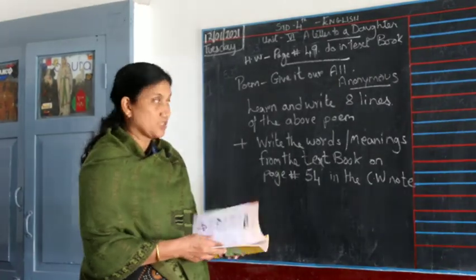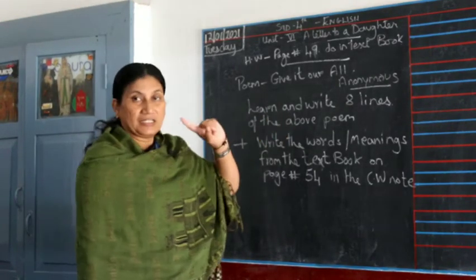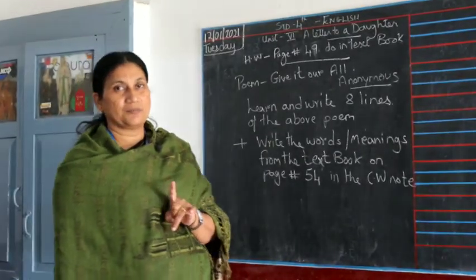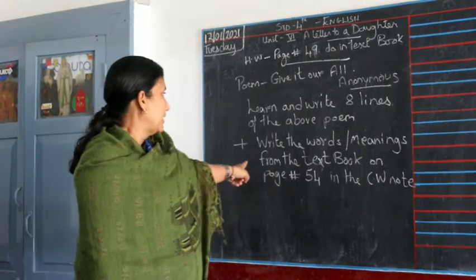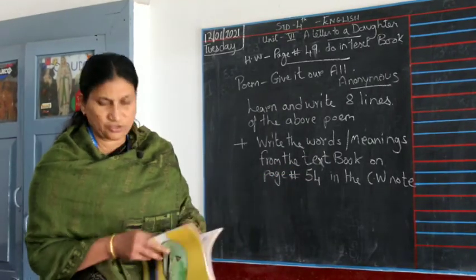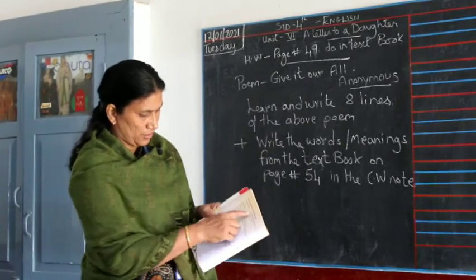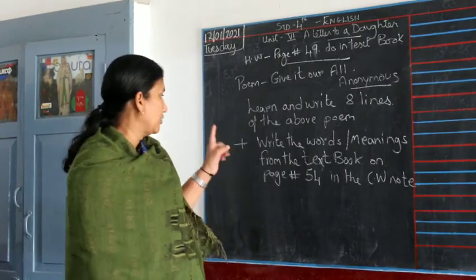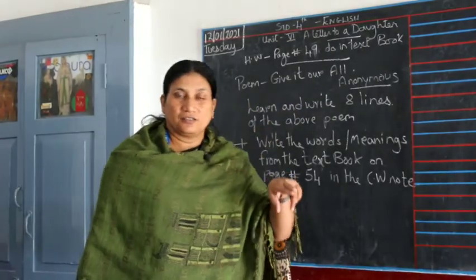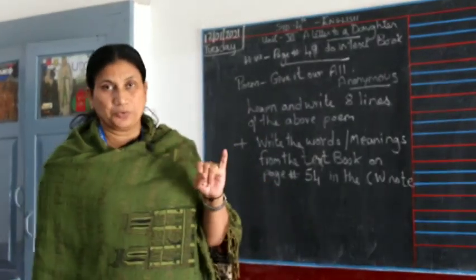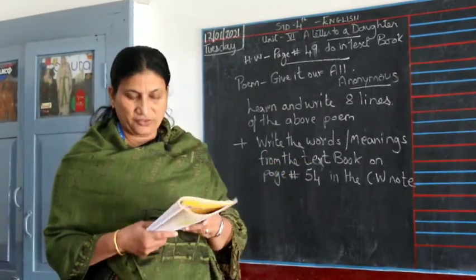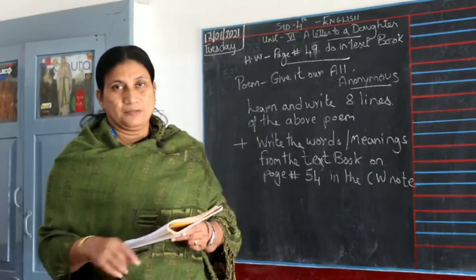This poem 'Give It Our All' is on page number 53 in your book. I want you all to learn and write eight lines of this poem — learn it by heart and write those eight lines. Then you have to write the words meaning from page number 54 in your classwork note. Write the name of the poem first, then the eight lines, then the words and meanings from page 54.